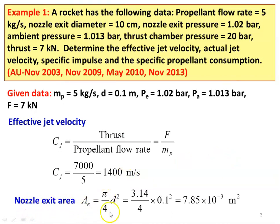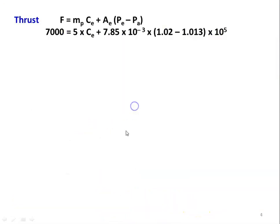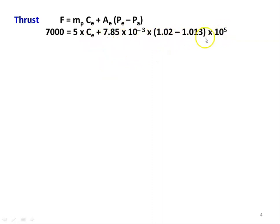The nozzle exit area Ae = π/4 × D² = 3.14/4 × 0.1² = 7.85 × 10⁻³ m². The thrust is also given by F = MP × Ce + Ae × (Pe − Pa), where the first part is momentum thrust and the second is pressure thrust. Substituting: 7000 = 5 × Ce + 7.85×10⁻³ × (1.02 − 1.013) × 10⁵. Solving, the actual jet velocity Ce = 1398.9 meters per second.